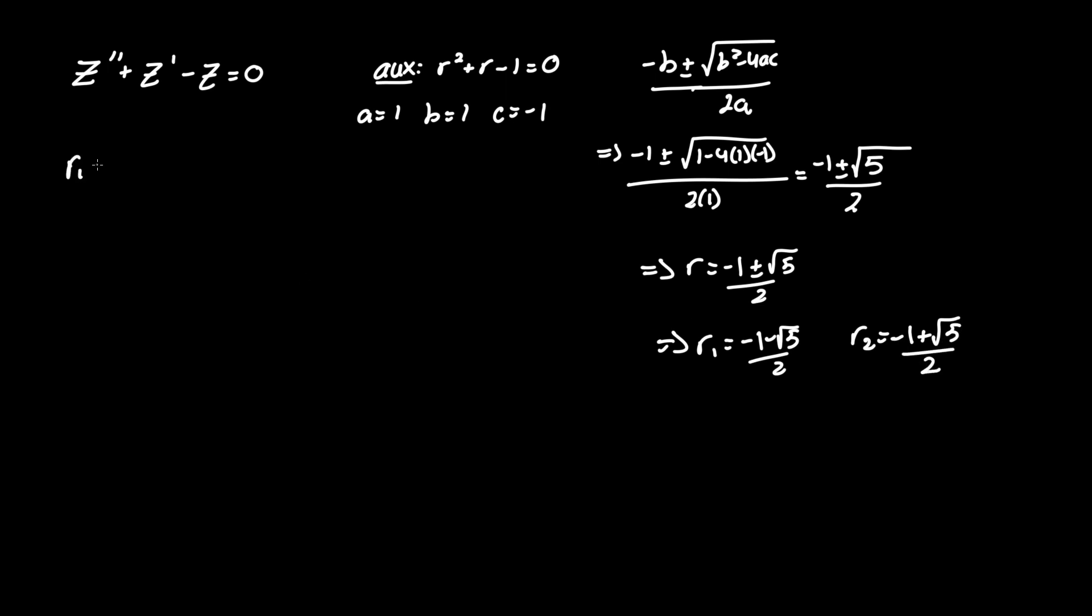Now we have a case in which r one doesn't equal r two, and that format would be y homogeneous equals c one e to the r one t plus c two e to the r two t. We include constant c to allow for a degree of freedom such that there are infinite solutions.